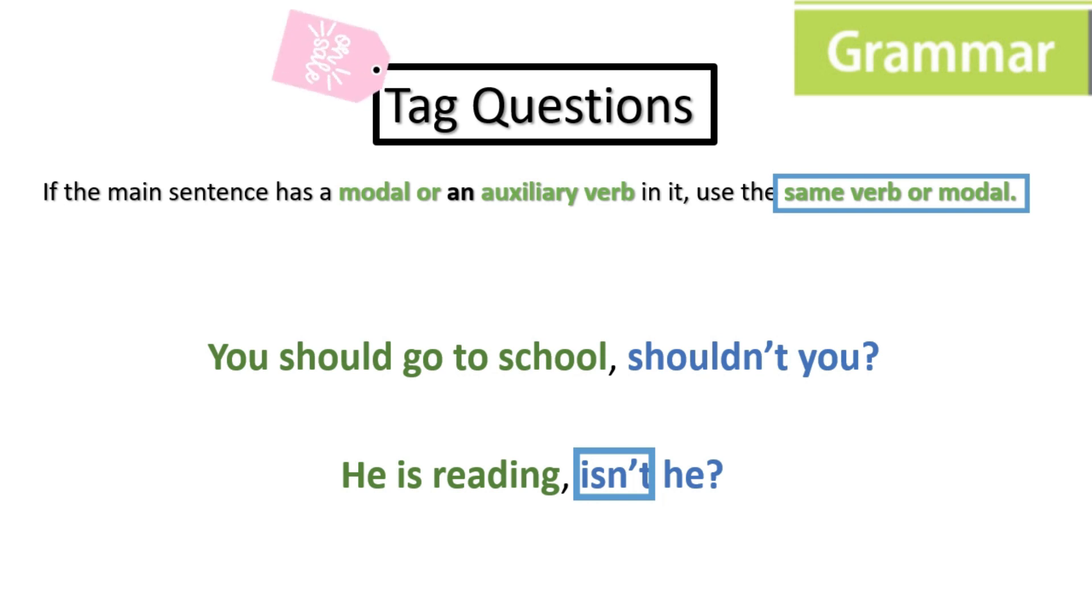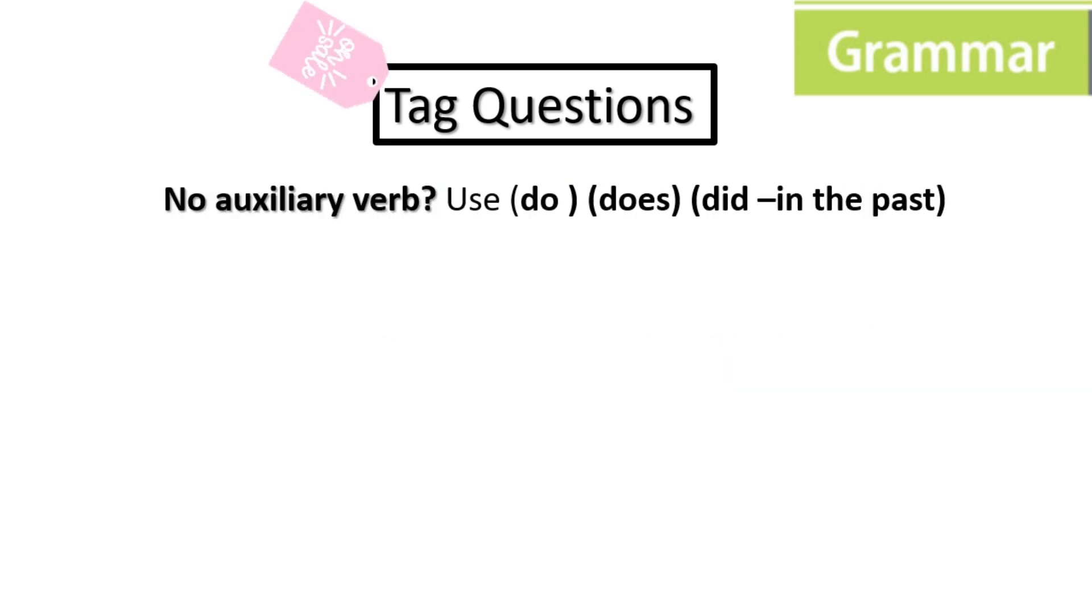When we don't have an auxiliary verb in a verbal sentence, we use do, does or did. For example, you don't like pizza, do you?